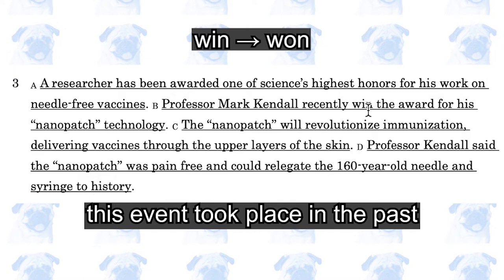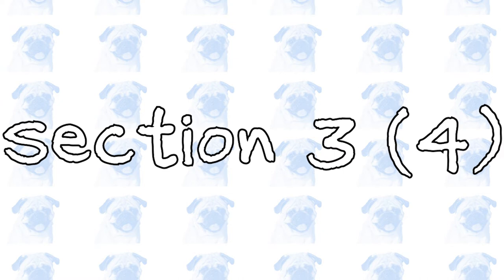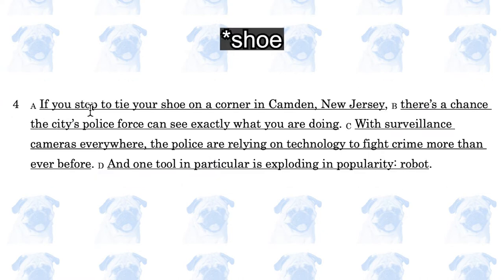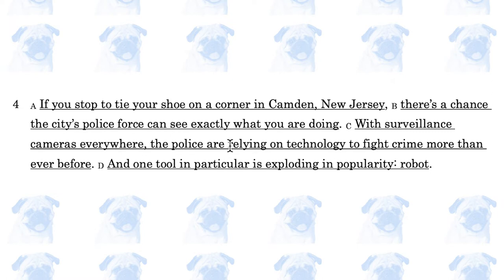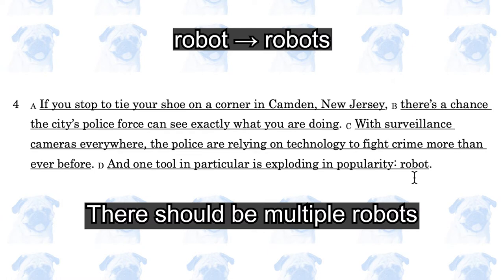If you stop to tie your shoes on a corner in Camden, New Jersey, there's a chance the city's police force can see exactly what you're doing. With surveillance cameras everywhere, the police are relying on technology to fight crime, and one tool in particular is exploding in popularity. The error is 'robot' — it should be 'robots,' because there is more than one robot.